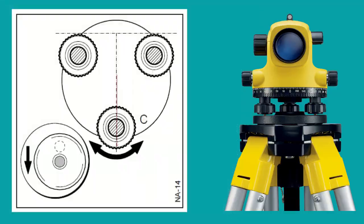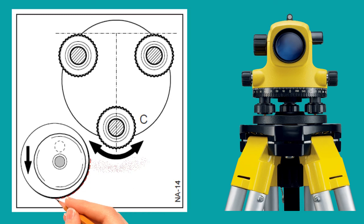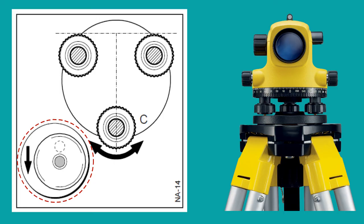And then keep the telescope perpendicular to that two foot screws, and adjust the third foot screw up or down as required to bring the level bubble at the center of the circle. Repeat the same procedure one more time to make sure that the bubble is perfectly at center.